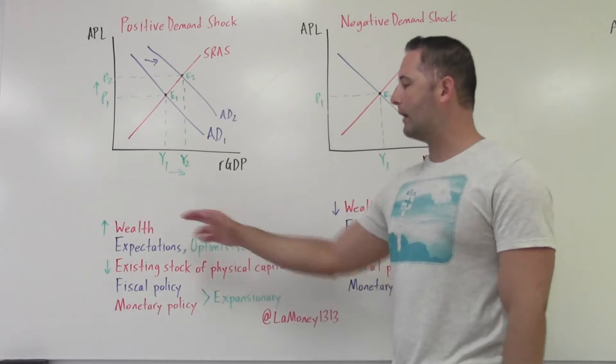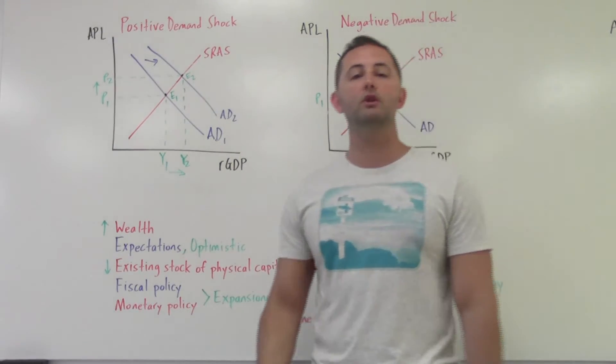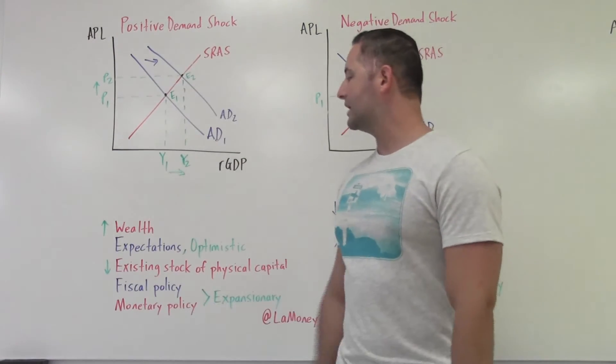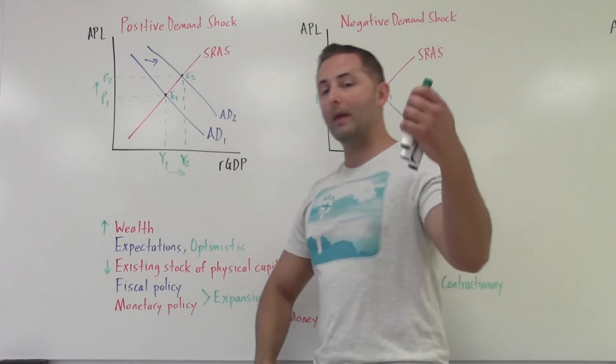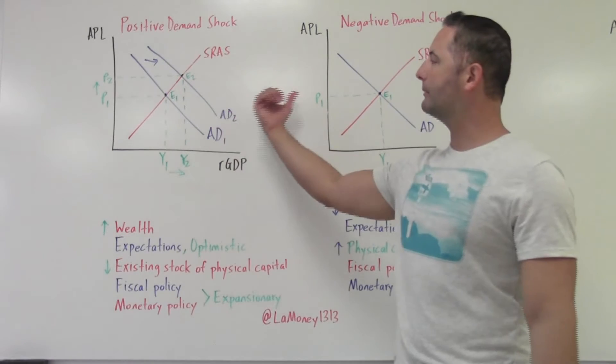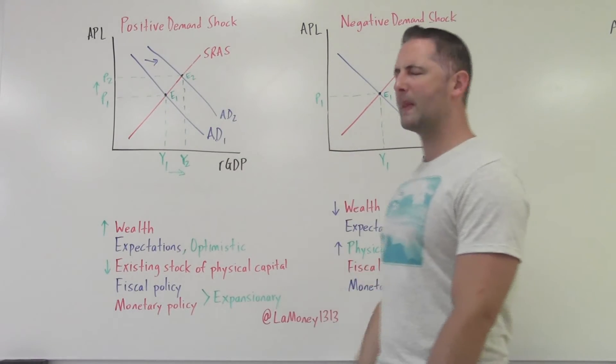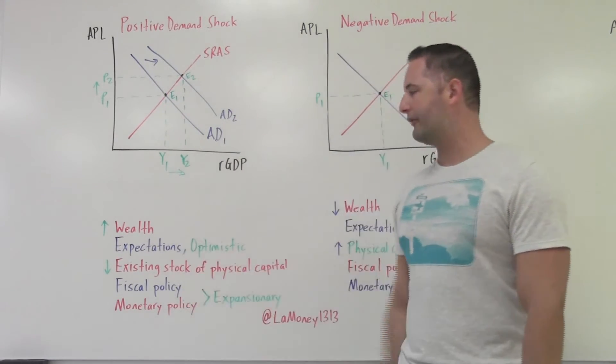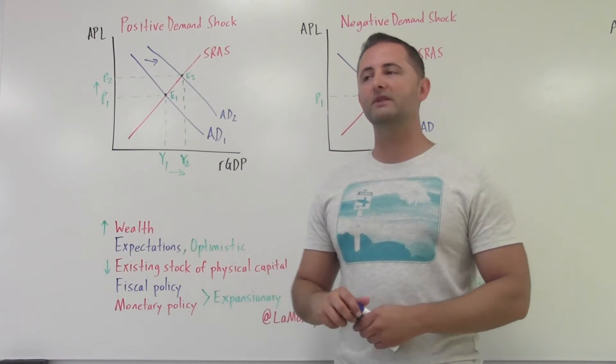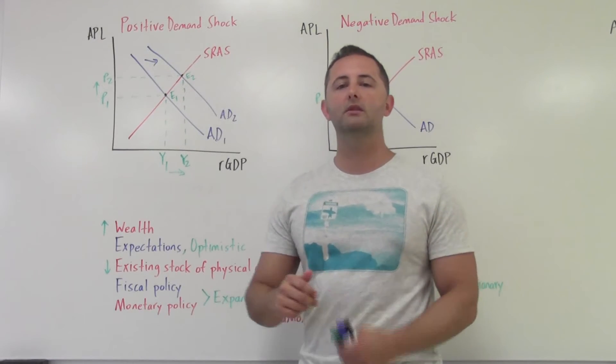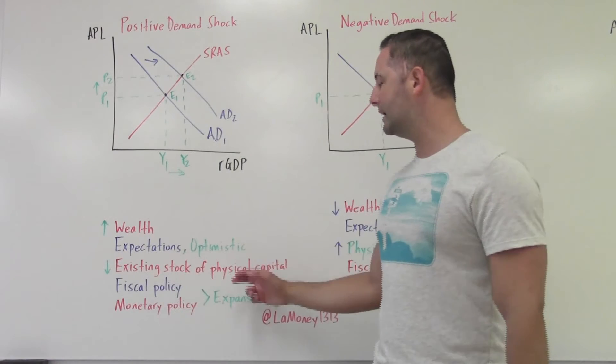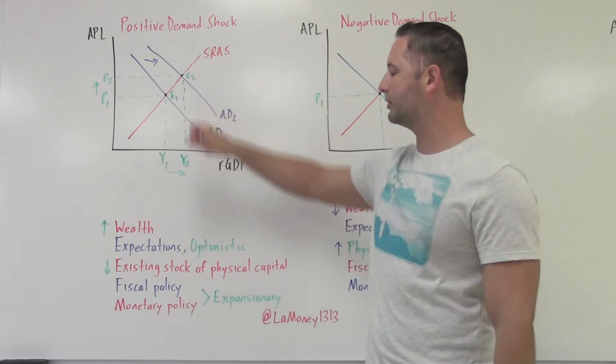If we have change in expectations, this is where consumers are more optimistic. So if you feel like the economy is getting better, it will actually increase aggregate demand. Later on, we're going to talk about how that is a very powerful force in the economy - expectations. But for now, optimistic expectations shift right. If we have a decrease, a lower amount of existing physical stock of capital, that's going to cause us to demand more because we need to replenish and replace. So a low existing stock of physical capital will increase aggregate demand.